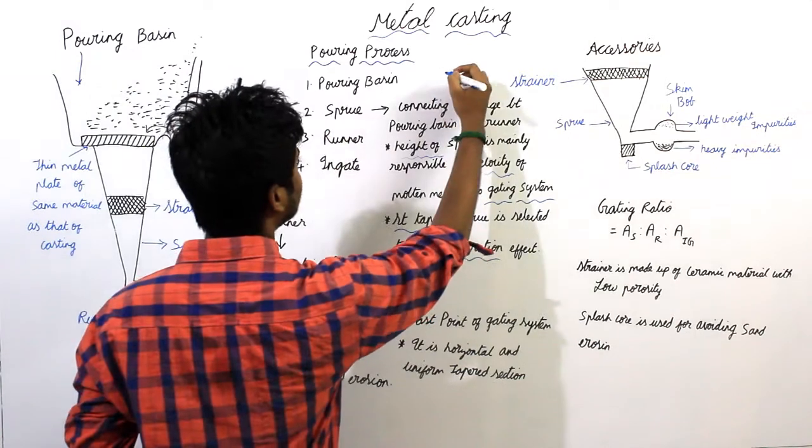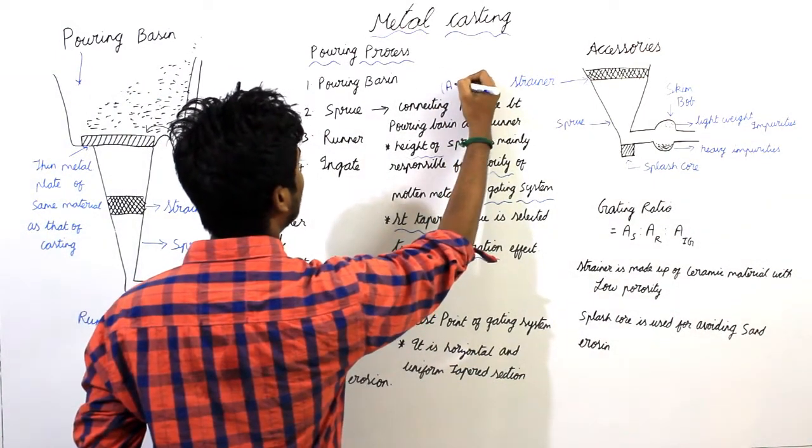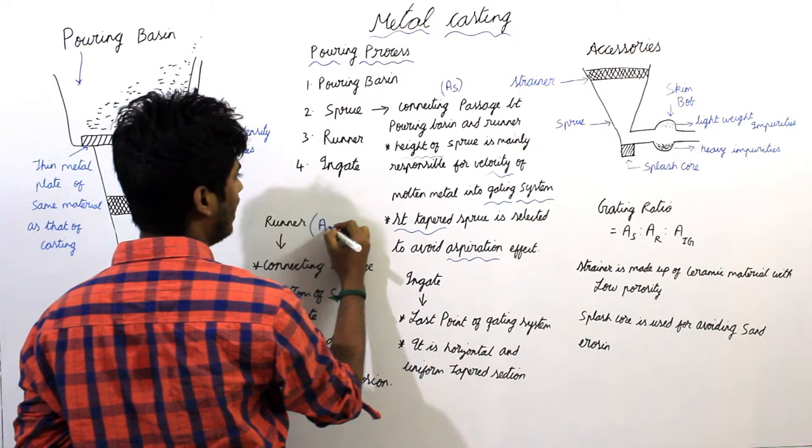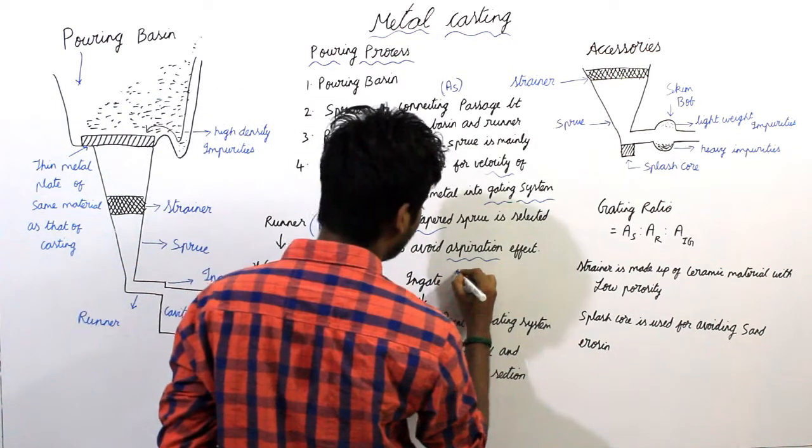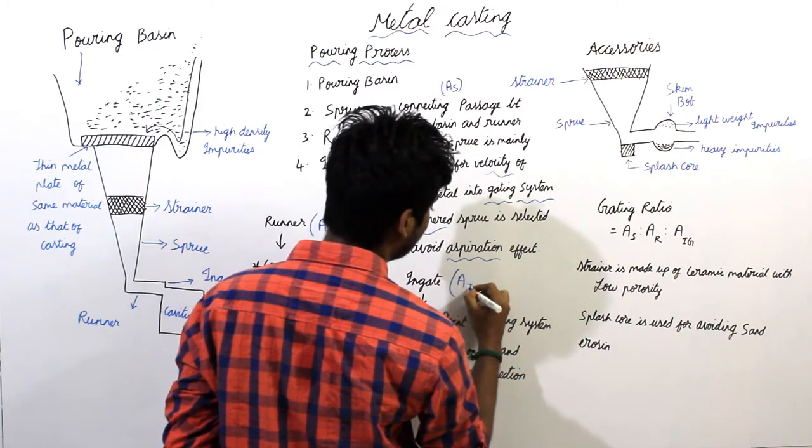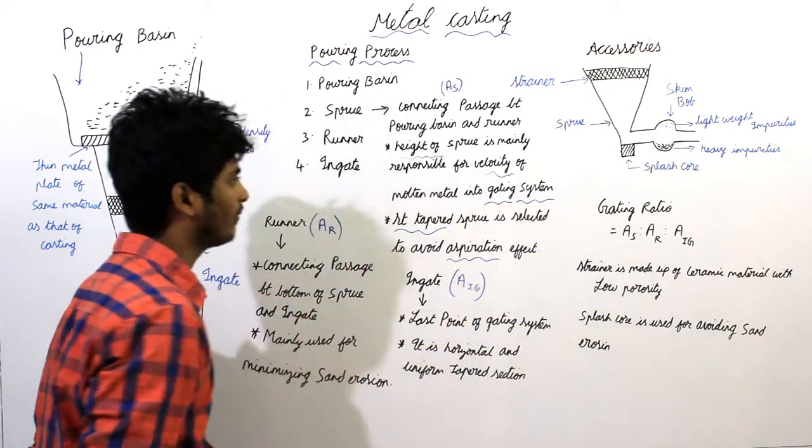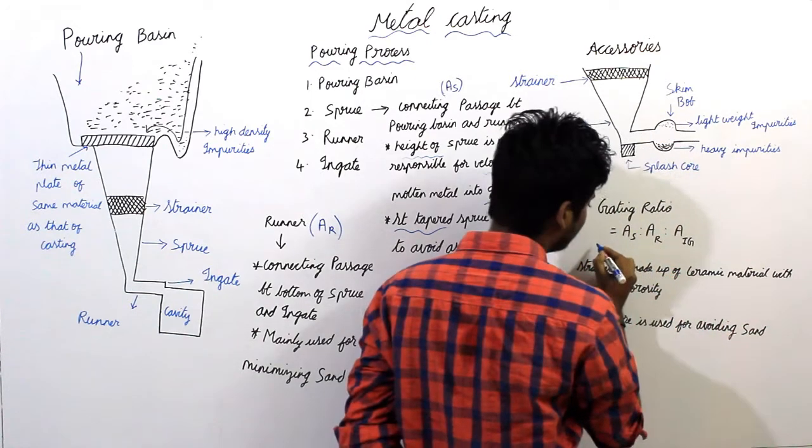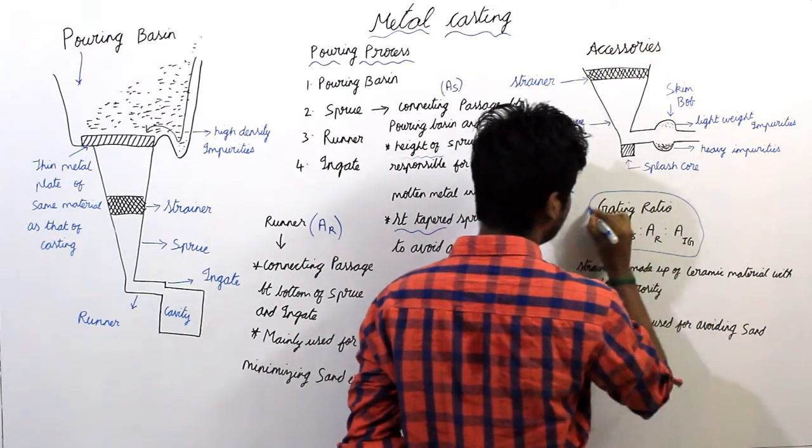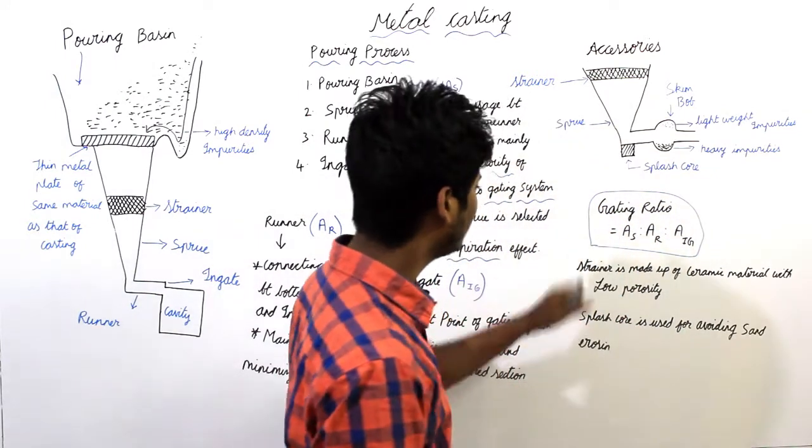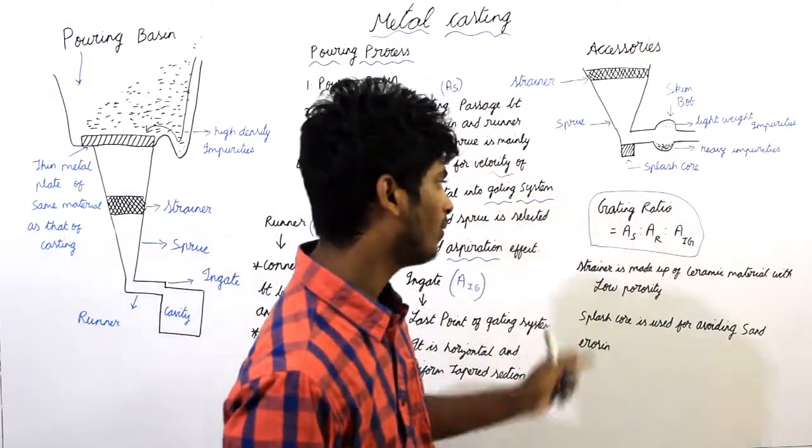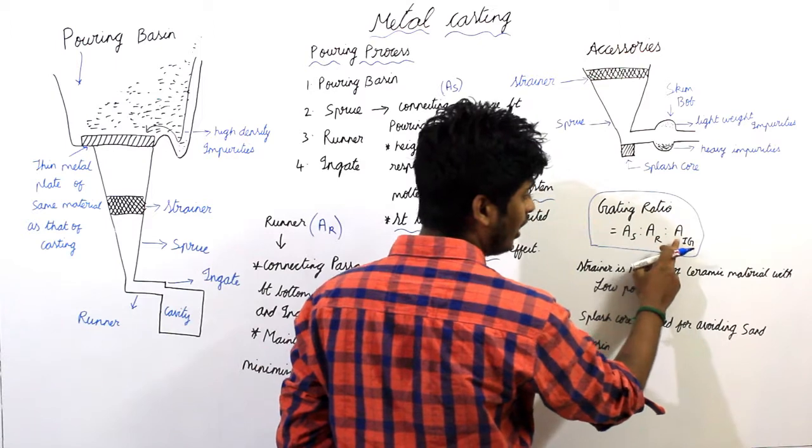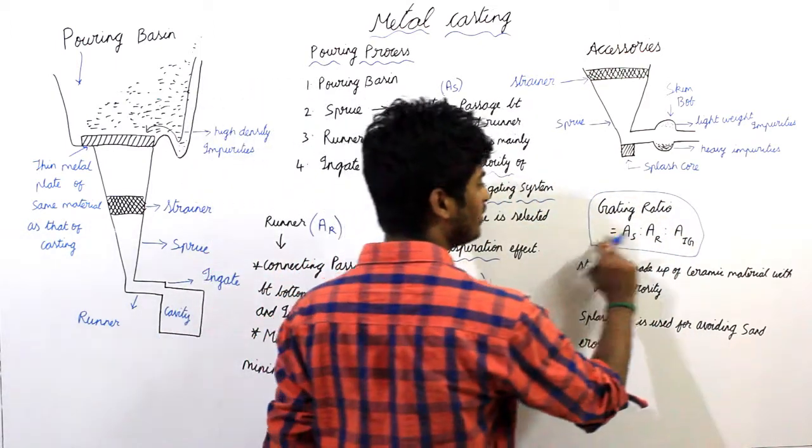Area of sprue can be written as AS, area of runner can be written as AR, and area of ingate as AI or AIG. The gating ratio given by AS is to AR is to AIG. Please always remember this gating ratio in same order. This is very much important for gating system. Remember it in same order because in all these problems also, in the question there will be given the ratio of sprue, runner and ingate in the same order. So always remember in the same order.